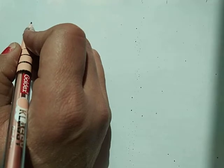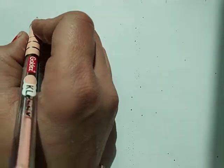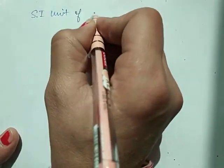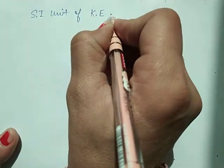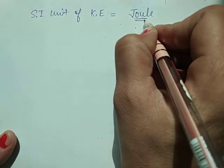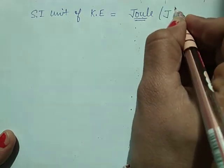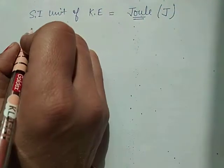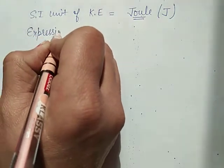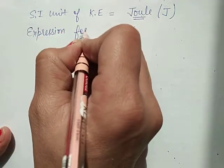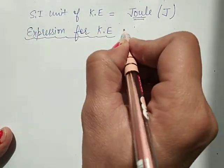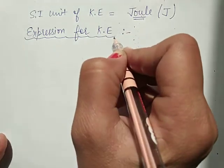What is the SI unit of kinetic energy? It is the same unit as that of energy — that is joule, denoted by capital J. Now next is the expression for kinetic energy. We will derive the formula for kinetic energy.